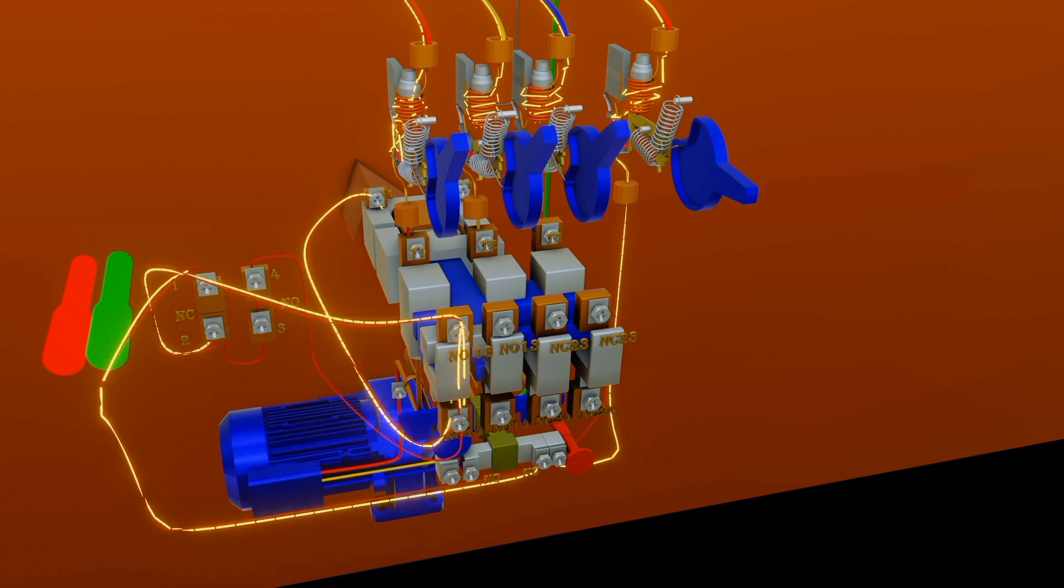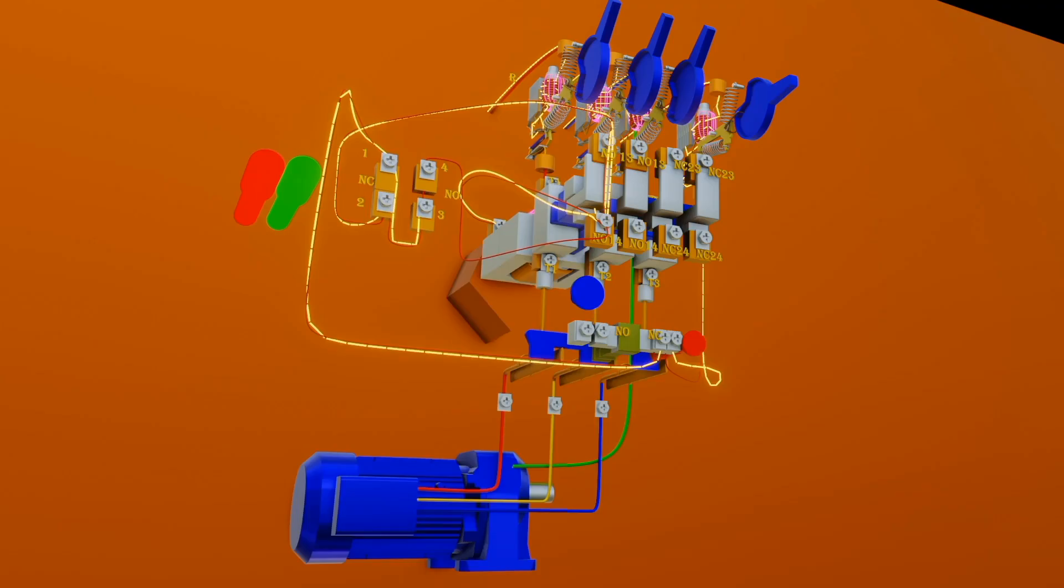But even when push button becomes open after pressed, the flow of current will continue to the coil. That is from terminal 2 of push button to terminal 13. Remember, normally open 13 and 14 become closed, hence current reaches A1 of the coil. But once the stop push button is pressed, it will stop the current flow to the coil.